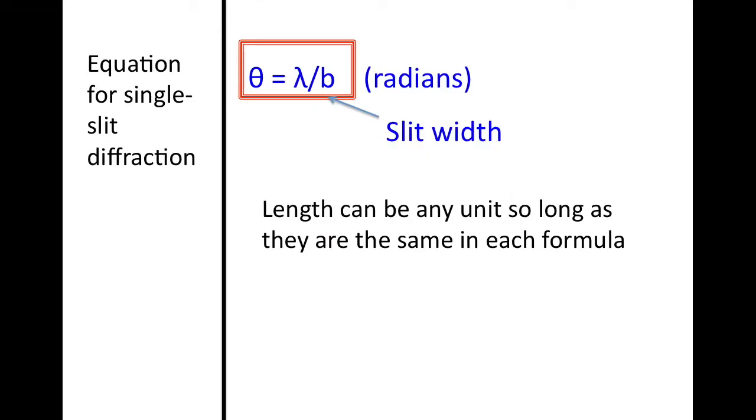Here is the equation for single slit diffraction. It is θ equals the wavelength λ divided by b. The variable b is used in your packet. However, you may see other variables such as a used in your textbook and elsewhere. Notice that the angle is in radians. However, the length can be in any measurement so long as you are consistent throughout your calculations.